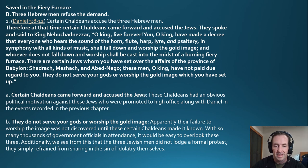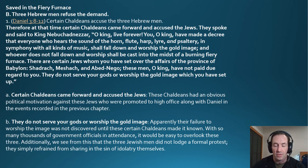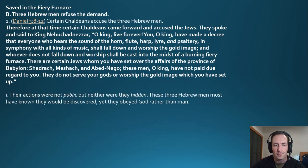These Chaldeans had an obvious political motivation against the Jews who had been promoted to high office in the previous chapter. Their failure to worship the image was not discovered until these Chaldeans made it known — with thousands of officials in attendance, it was easy to overlook three men. Notably, the three Jewish men did not lodge a formal protest; they simply refrained from sharing in the sin of idolatry. They knew they would be discovered, yet they obeyed God rather than man.